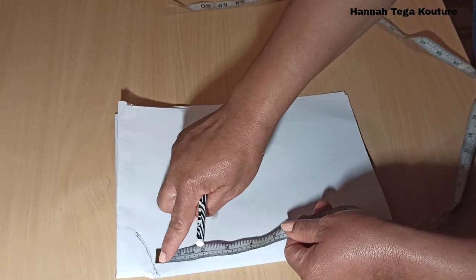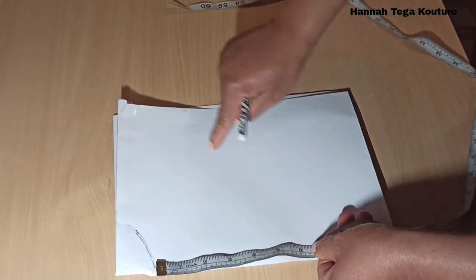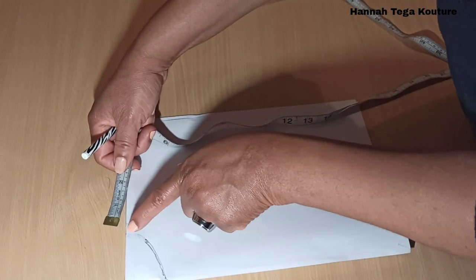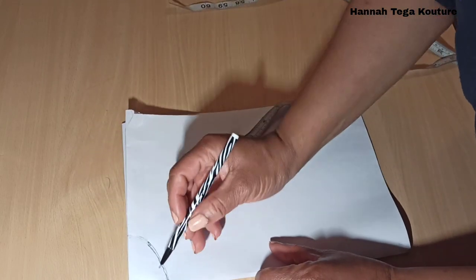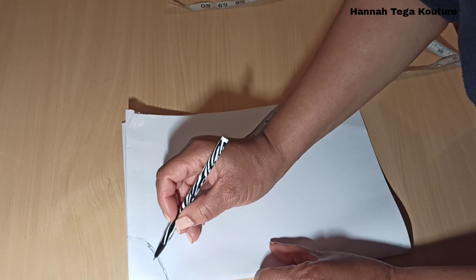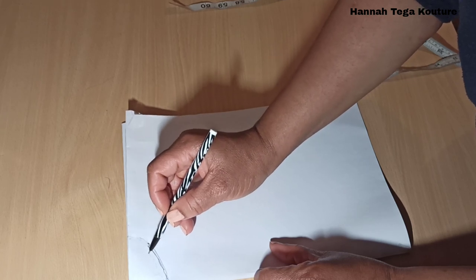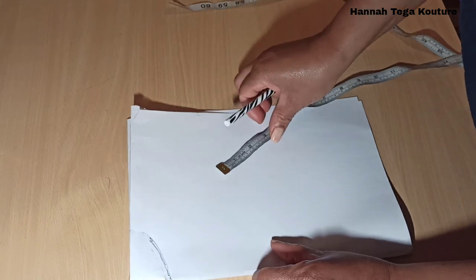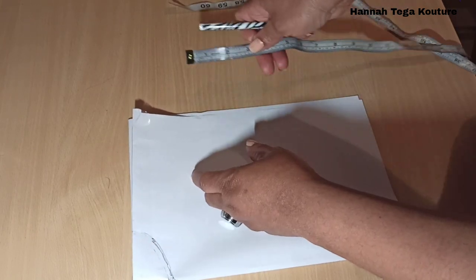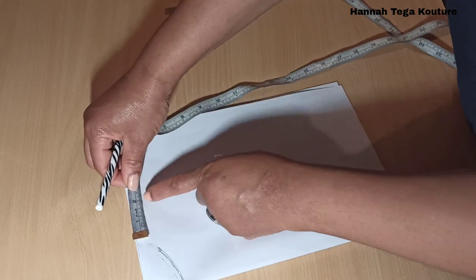So you want to go ahead and add your skirt length, but before then you want to add sewing allowance to your waistline. If you want to add a band, you need half an inch sewing allowance. You can add it over there, half an inch for your sewing allowance, then carry on adding your skirt length.